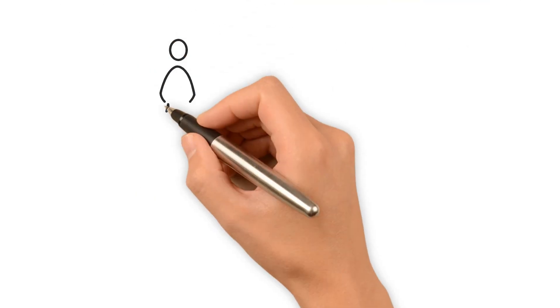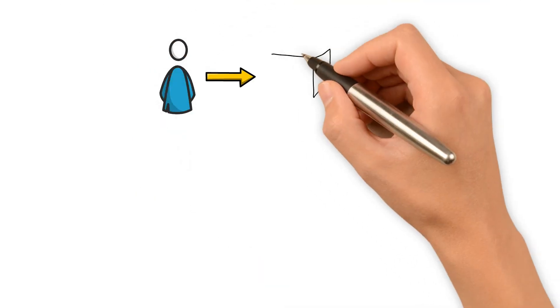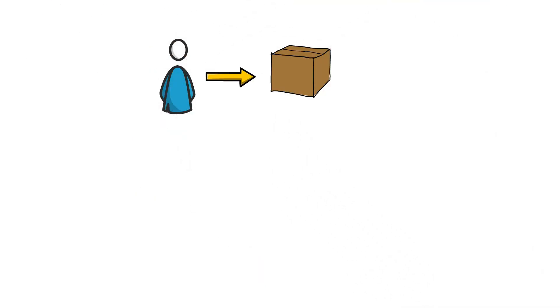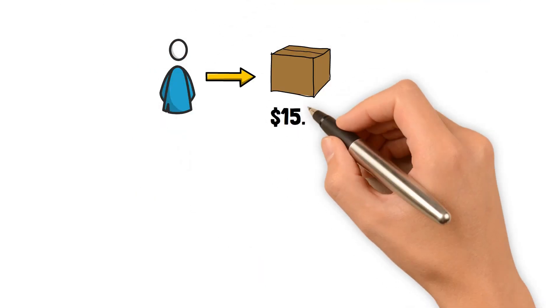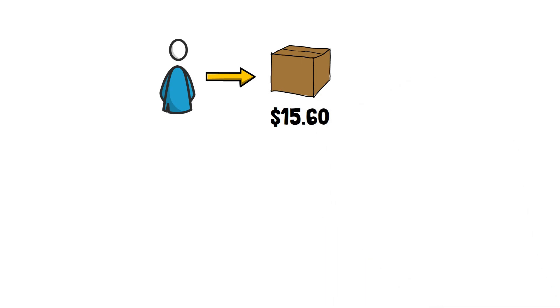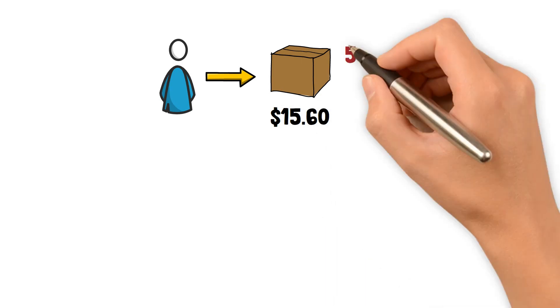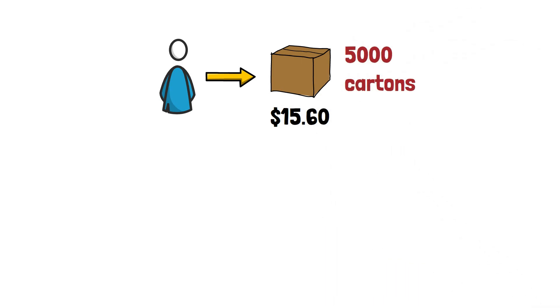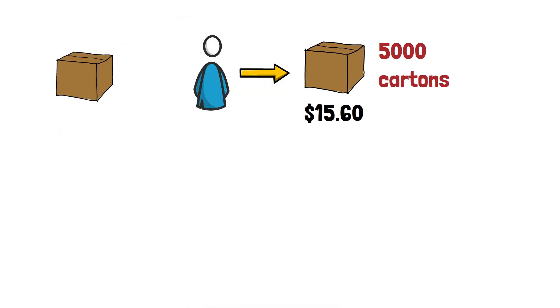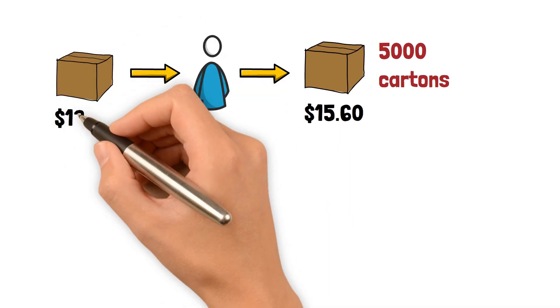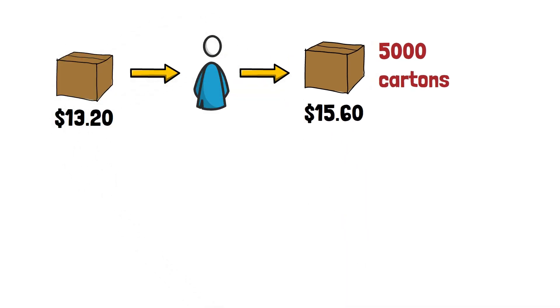For example, assume a food wholesaler is offered $15.60 per two-layer carton for 5,000 cartons of peaches. The wholesaler can buy peaches from their growers at $13.20 per carton.